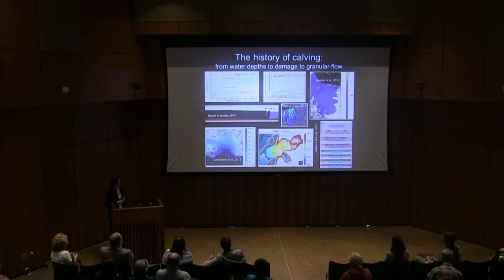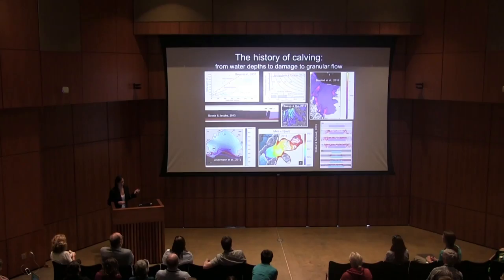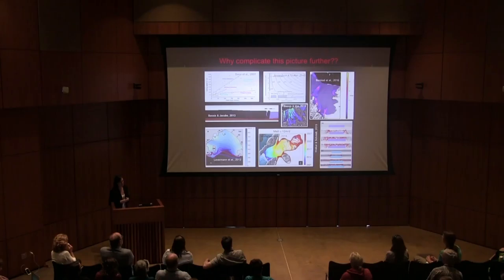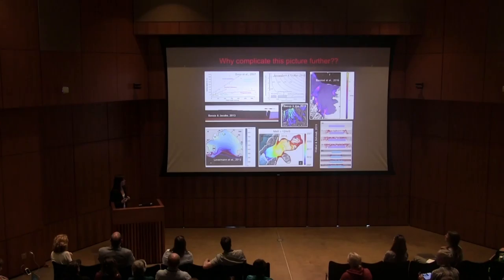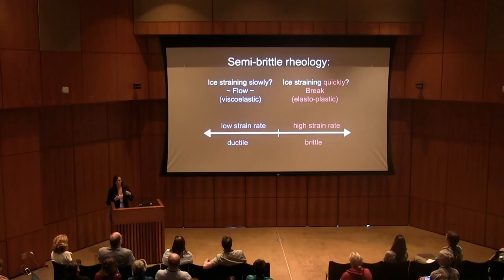Even though the Larsen B is an atypical, bookend member of calving, it illustrates that melting and calving are not necessarily competing and independent processes, but rather work in tandem and interact. Many smarter people than myself have approached the calving problem using an array of techniques — this enormous slide serves to illustrate that calving is complicated, and many approaches have been tried. So why complicate the picture further? We might be better served by shifting focus from a universal calving law to perhaps a universal calving material.